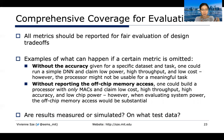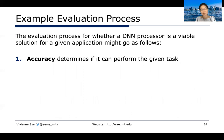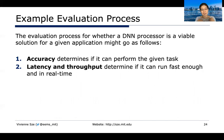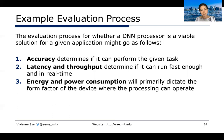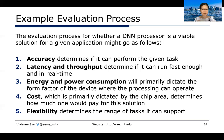An example evaluation process folding all metrics together might look as follows. Start by asking about accuracy — does it perform a given task? Then ask about latency and throughput — can it run fast enough and in real time for your application? Then look at energy and power consumption, which primarily dictates the form factor — can it be in your pocket or does it need to be in the cloud? Then cost — how much would you have to pay? Finally, flexibility — does it support just a subset of tasks or a range of tasks?